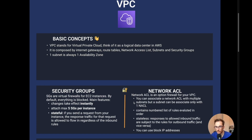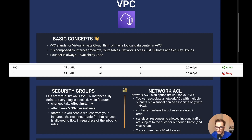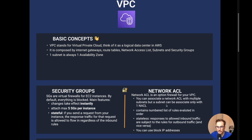On the other hand, we have network access control lists. The network ACL is an optional firewall for your VPC — so this is at the VPC level, whereas security groups are at the EC2 instance level. You can associate a network ACL with multiple subnets, but a subnet can be associated with only one network ACL — this is very important. It contains a numbered list of rules, so the order matters because rules are evaluated starting from the lowest number.